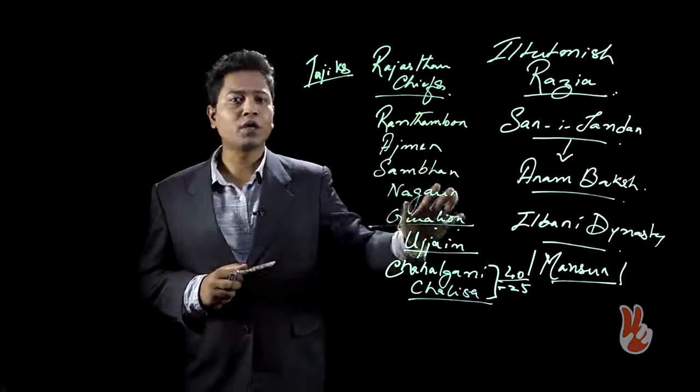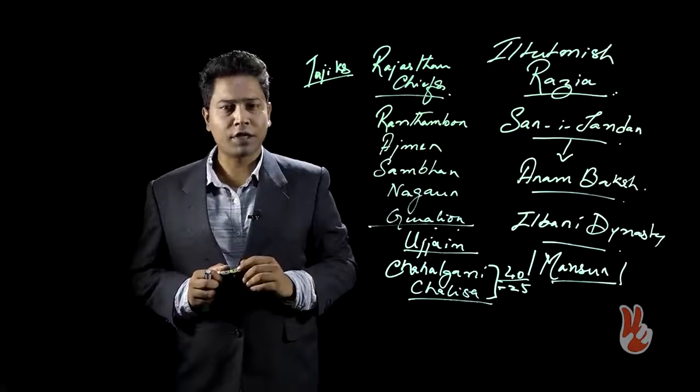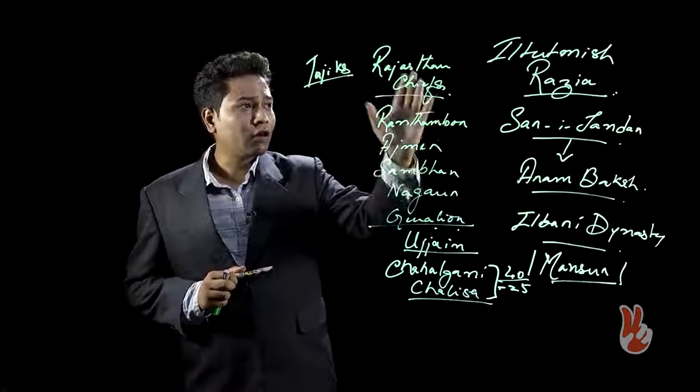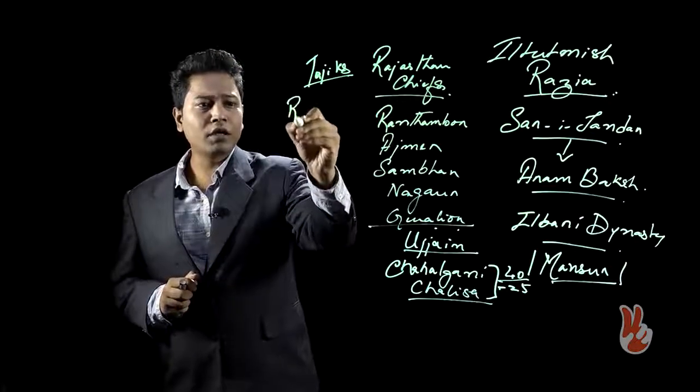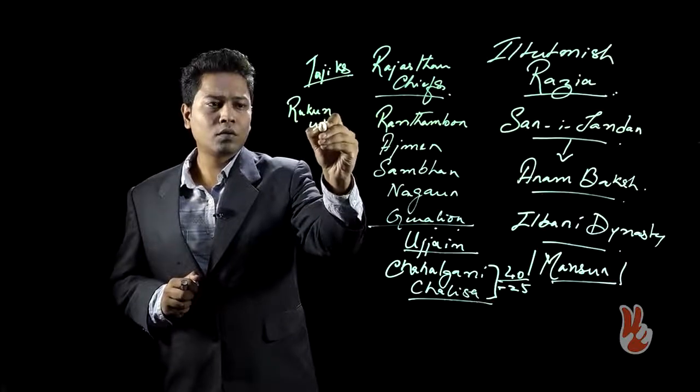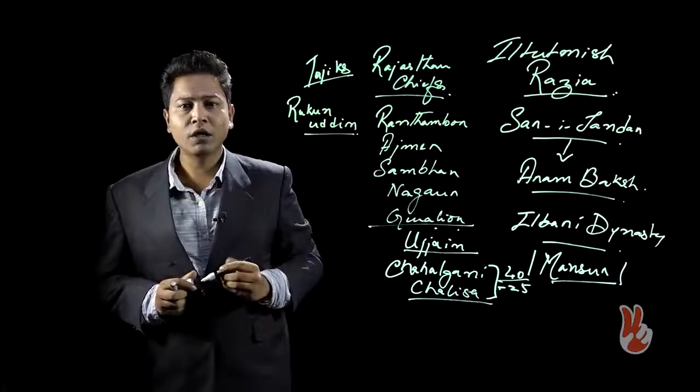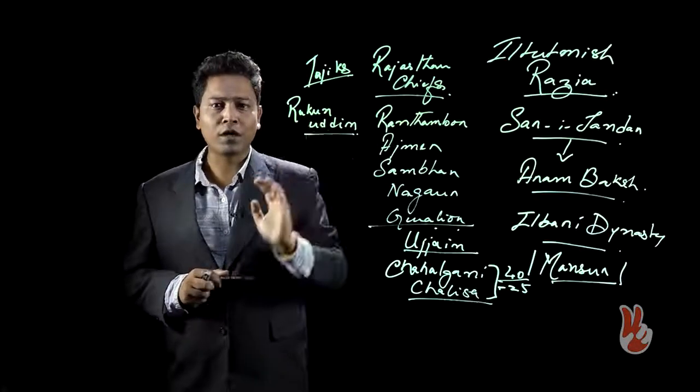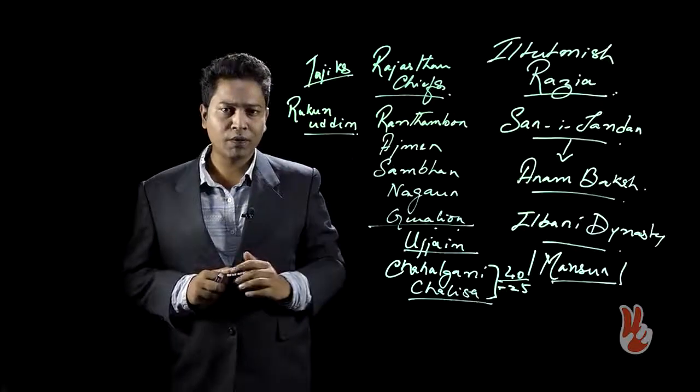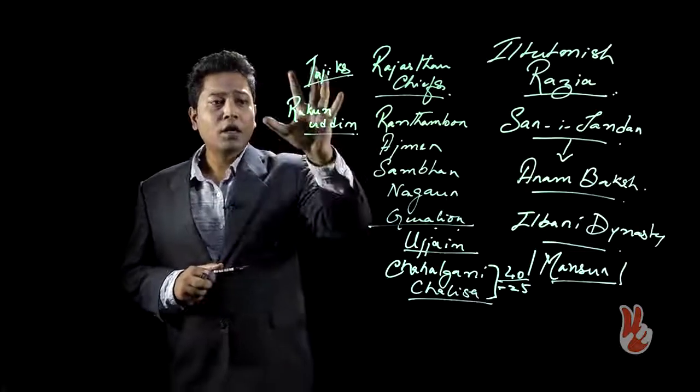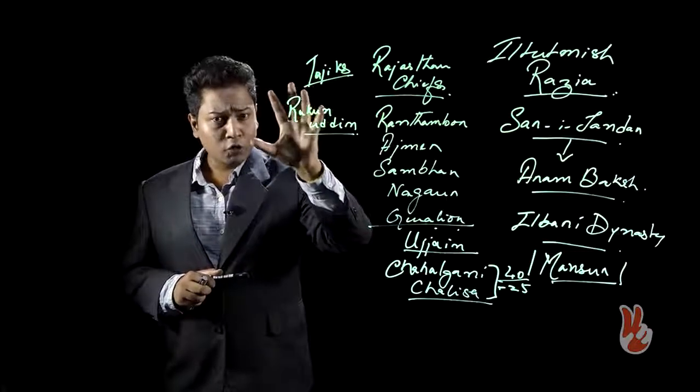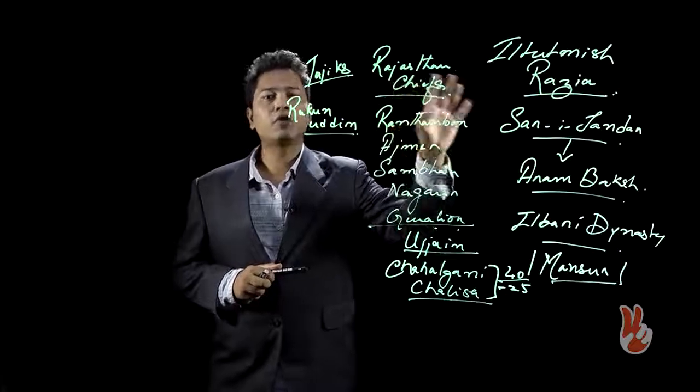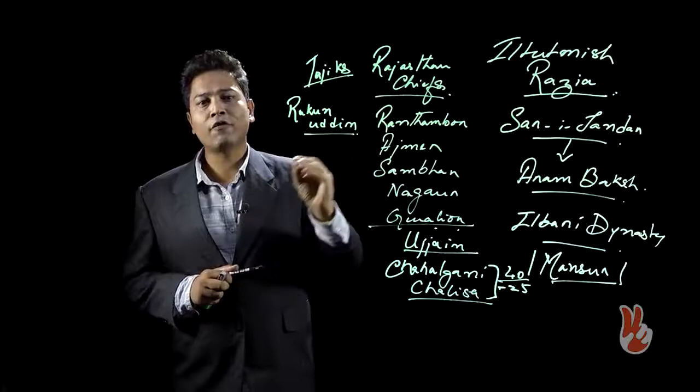But let us see the progression in which Razia becomes the Empress of India, the Sultana of India. How does she do that? After the death of Iltutmish, we see his son Rukunuddin coming into power. Rukunuddin is put into the throne by the Sultana of that period, Iltutmish's wife. Rukunuddin comes to power, but it should be remembered that Iltutmish himself had always favored Razia.